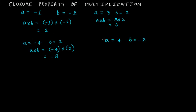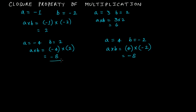What about a = 4 and b = -2? Here a is positive and b is negative. So a × b = 4 × (-2). Since there is only one negative integer involved, the product will again be negative: -8. Both results here are -8, and these are both negative integers.